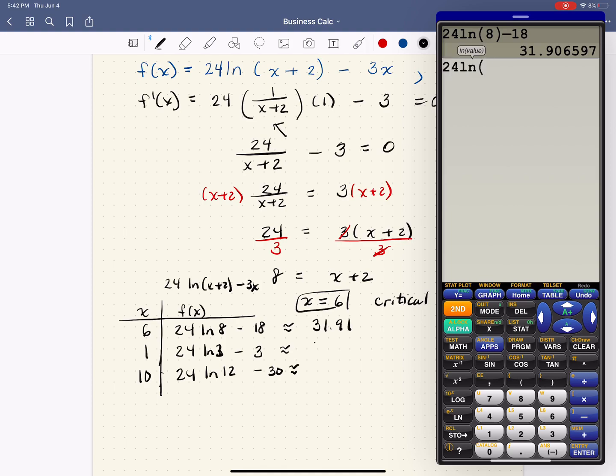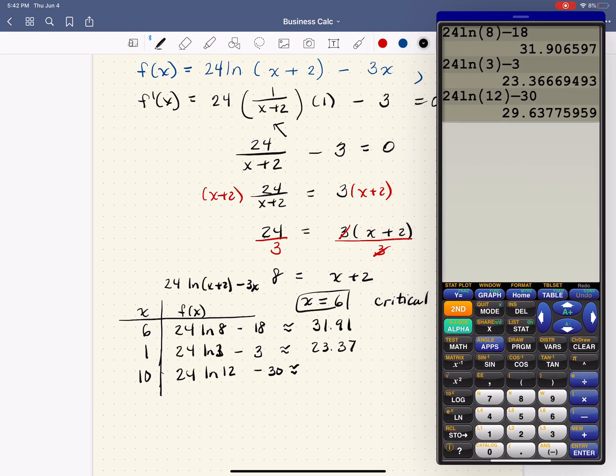24 natural log 3, closing that parentheses before we subtract the 3, so it's like 23.37. And 24 natural log 12 minus 30 gives us 29.64.